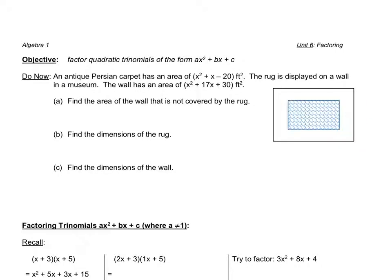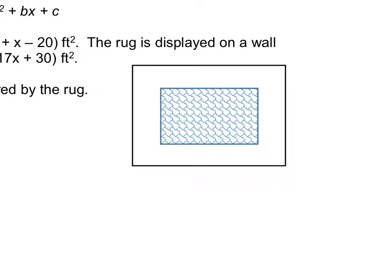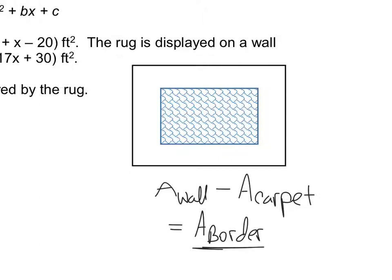The area of the border, that little white border there, is the area you would get if you take the area of the wall and subtract from it the area of the carpet. That would give you the area of the border. That's the same for anything. If you have a circle within a circle, triangle within a rectangle, it doesn't matter. Two geometric overlapping shapes, subtract one from the other, you'll get the area in between.